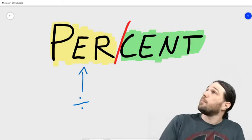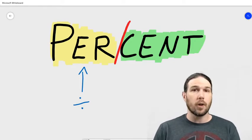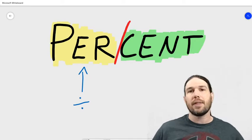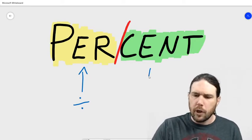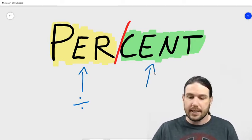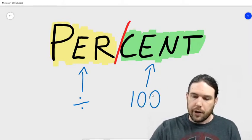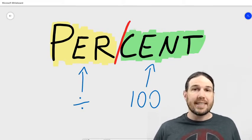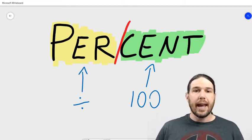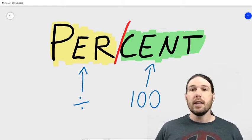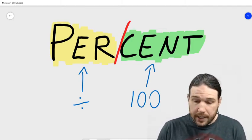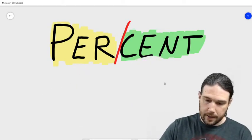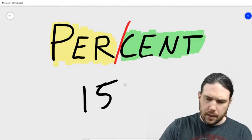Now, this second bit — 'cent' — is something I've talked about before on this channel when I was doing my video on the metric system. Even without that particular video, most of you know that the word 'cent,' or the prefix or suffix 'cent,' means one hundred. There are a hundred years in a century, there are a hundred cents in a dollar. 'Cent' means a hundred, and 'per' means divided by.